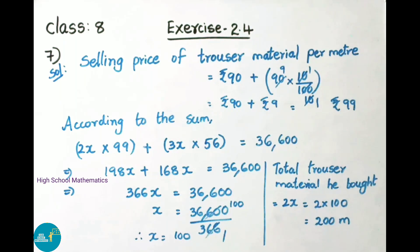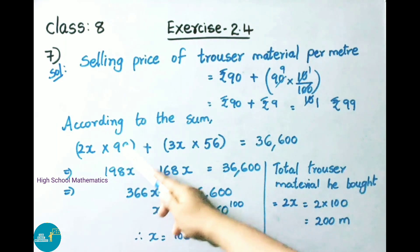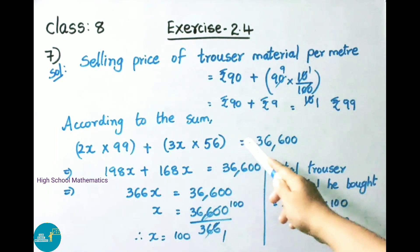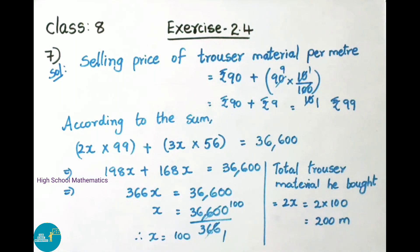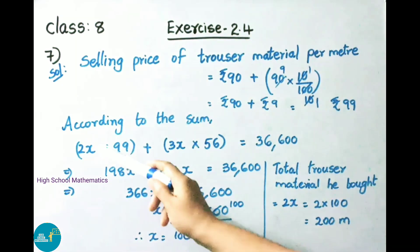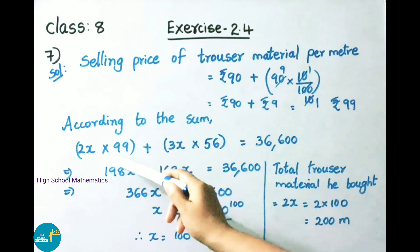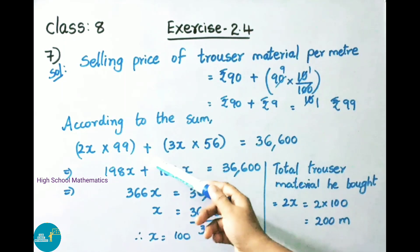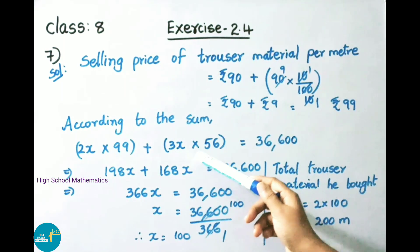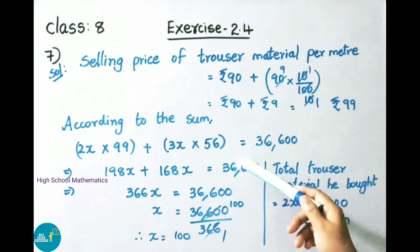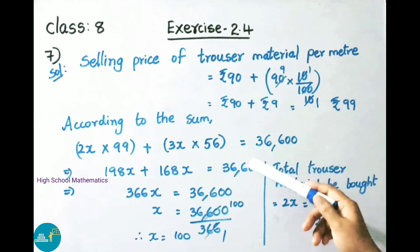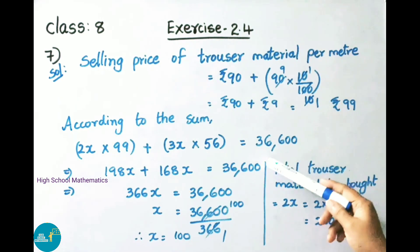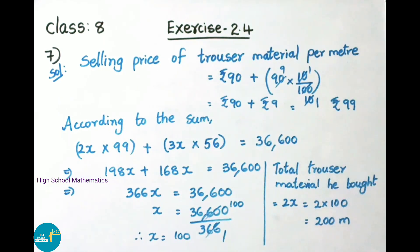According to the sum, for every 2 meters of trouser material he bought 3 meters of shirt material. So the equation is: trouser material 2x into 99 rupees plus shirt material 3x into 56 rupees equals the given total amount of 36,600 rupees.